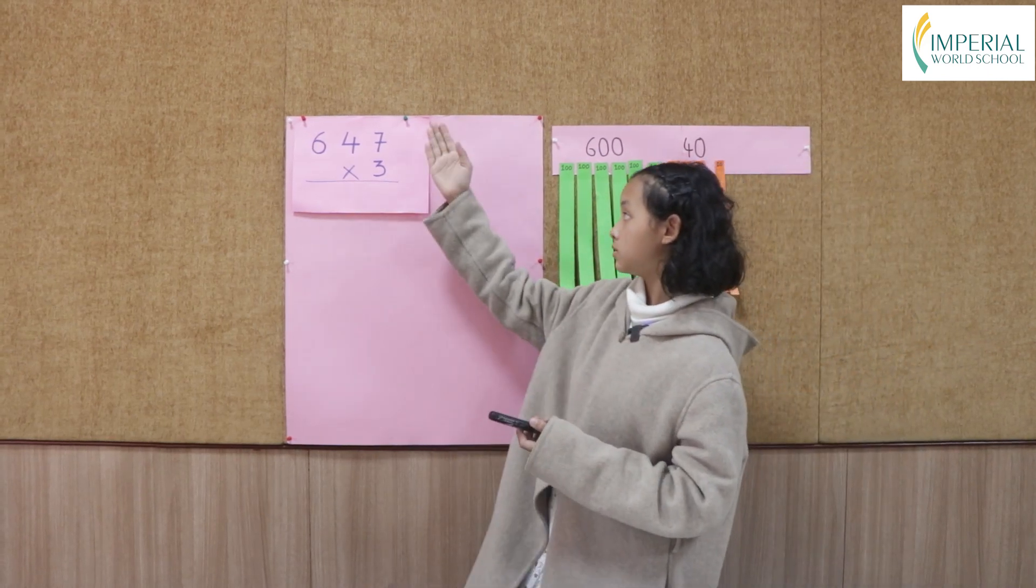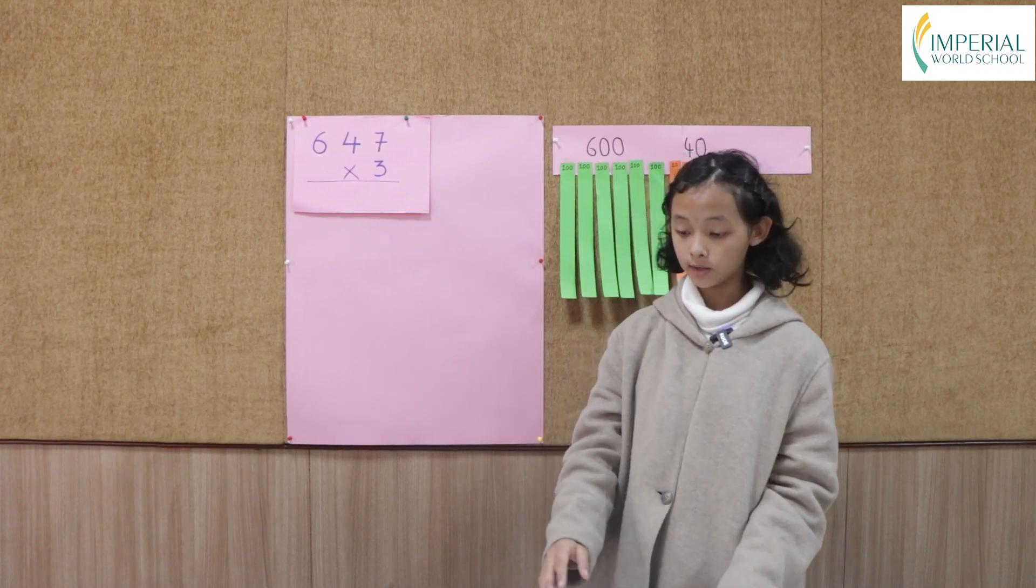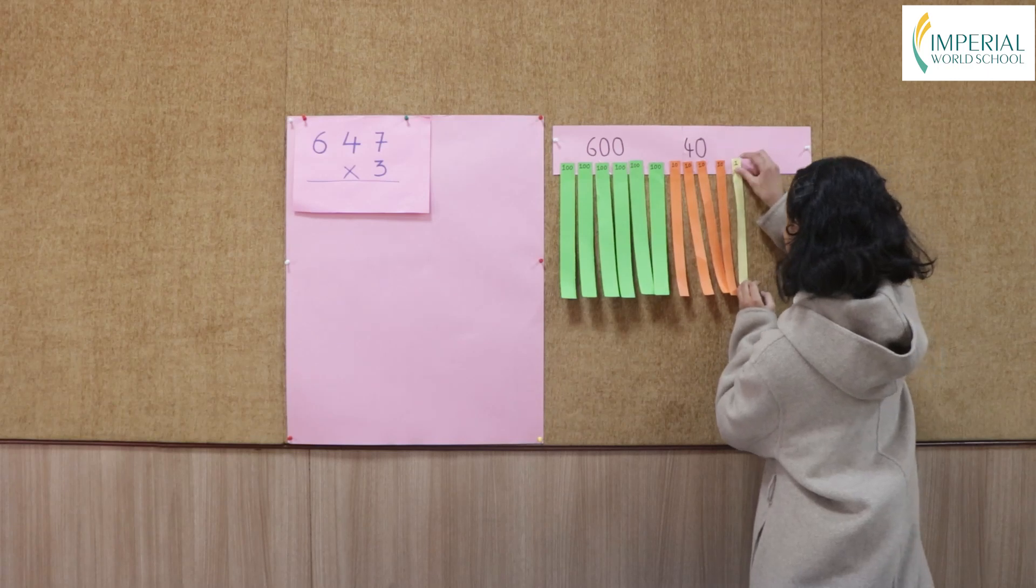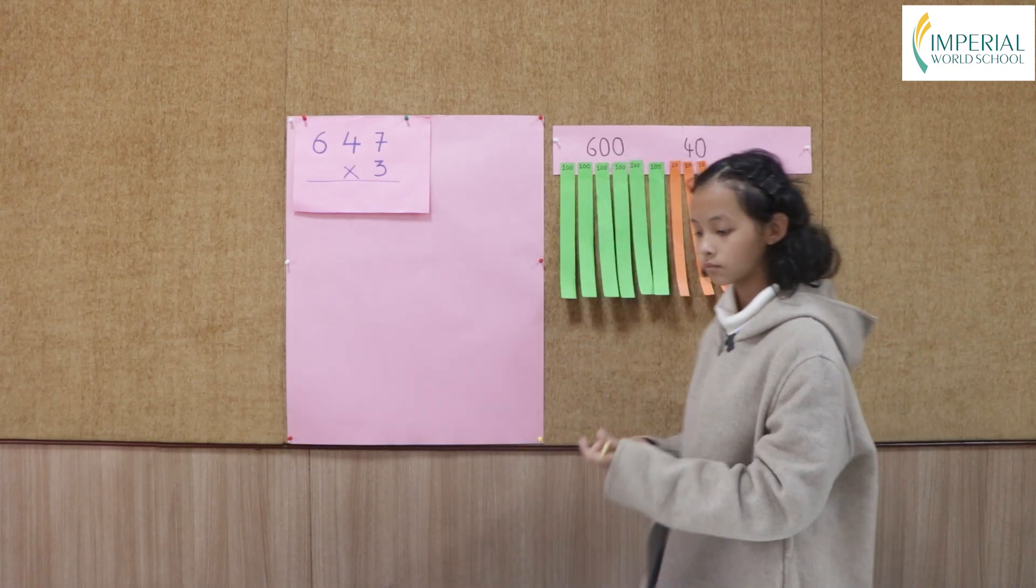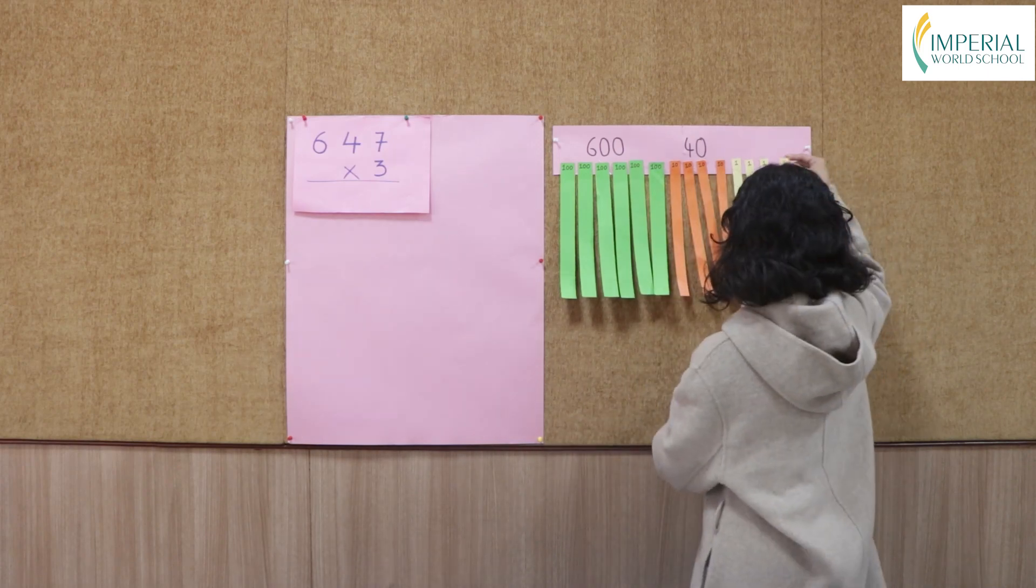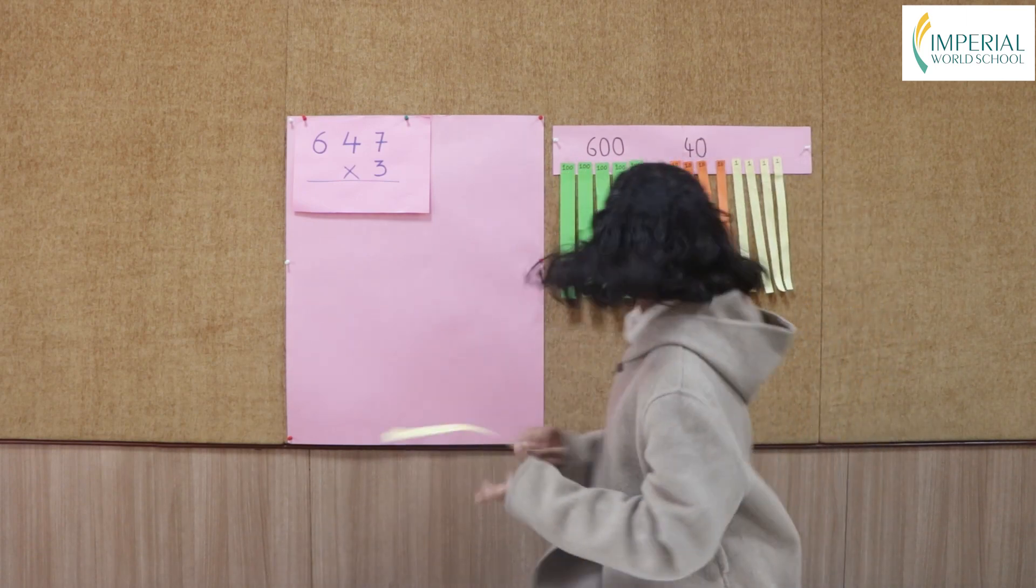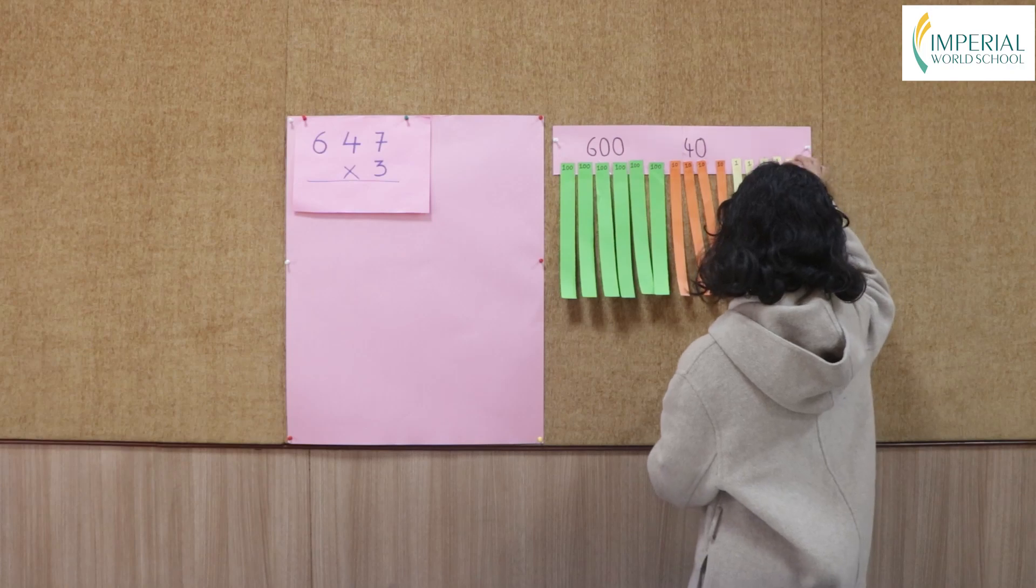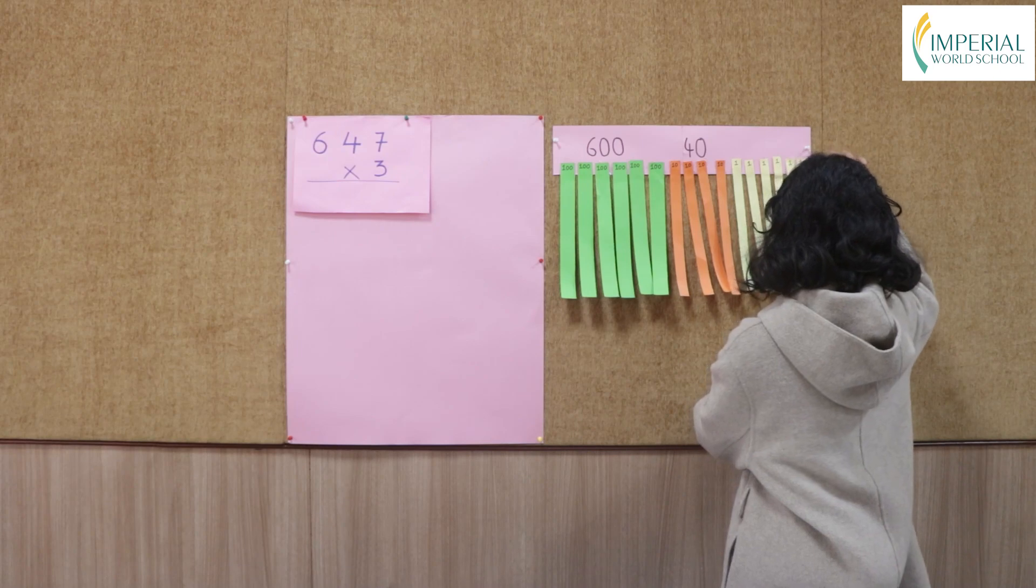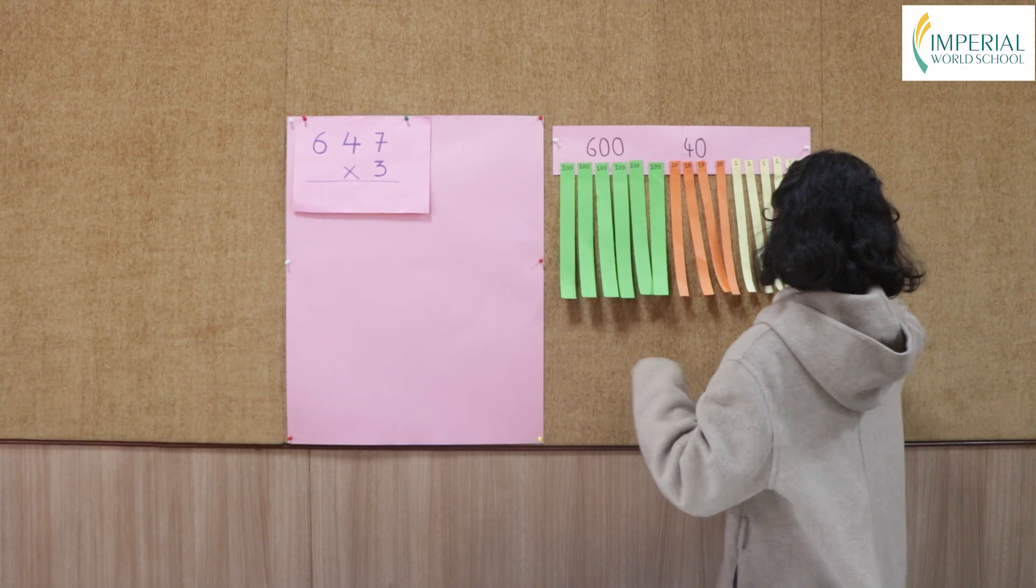Now let's move on to 7. The place value of 7 is 1, so I'm going to take 7 ones. Now we have 7 ones.